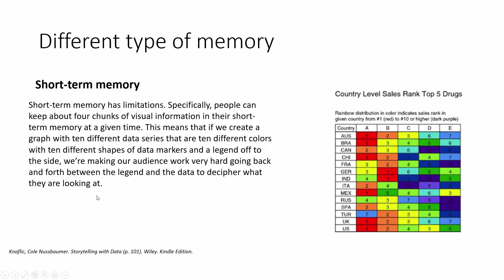Another type is short-term memory, which always has a limitation — it's able to keep about four chunks of visual information or five different values. You may have heard that, for example, if you want to create a survey, it's better to use a scale from one to five. If it's one to ten, it's very hard for the audience and the participants to answer questions.